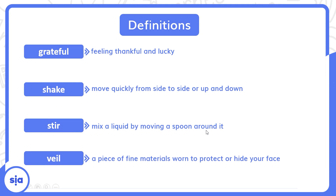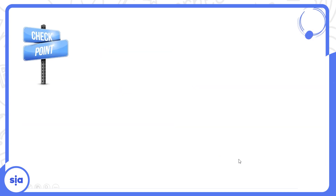Veil — a piece of fine material worn to protect or hide your face — الطرخة. خلي بالنا: نقولها veil مش veal. العروسة دايما بتلبس veil، يعني طرخة.